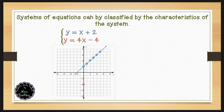For the second equation, y equals 4x minus 4, our slope is positive 4 and our y-intercept is at the point (0, -4). We'll plot our point at (0, -4) and with a slope of 4, we will go up 4 and over 1, continuing until we make that line.